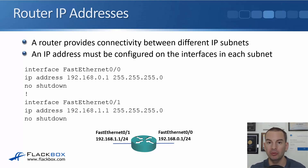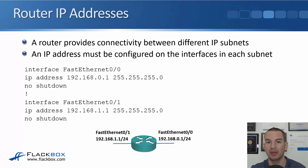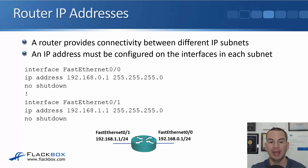On our routers, interfaces are shut down by default. So remember to also put in the 'no shutdown' command to bring the interface up. We do that for FastEthernet0/0 and then also configure FastEthernet0/1, giving it IP address 192.168.1.1 with subnet mask 255.255.255.0, and no shutdown.